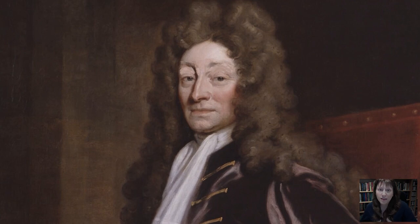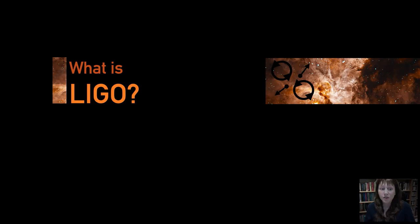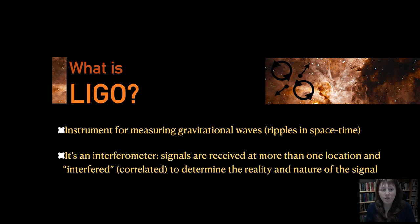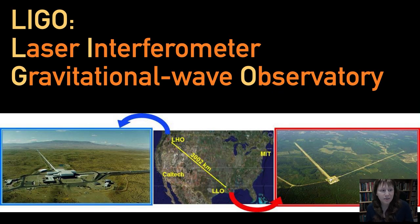LIGO is responsible for the initiation of the wonderful new field gravitational wave astronomy. So what is LIGO? LIGO is an instrument for measuring gravitational waves, for measuring these ripples in space-time. It's a type of instrument that we call an interferometer. Signals are received at more than one location and then interfered with one another to determine the reality and the nature of the signal. LIGO stands for the Laser Interferometer Gravitational Wave Observatory.